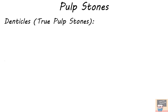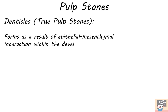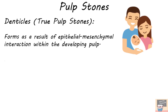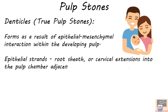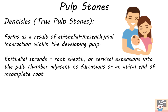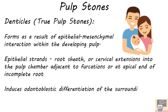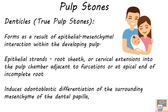True pulp stones form as a result of epithelial-mesenchymal interaction within the developing pulp. Epithelial strands from either Hertwig's epithelial root sheath or from the cervical extension of the enamel organ migrate into the pulp chamber adjacent to the furcation or at the apical end of incomplete roots. These epithelial strands then induce odontoblastic differentiation of the surrounding mesenchyme, that is the dental papilla, and form the core of the denticle, which is the true pulp stone.